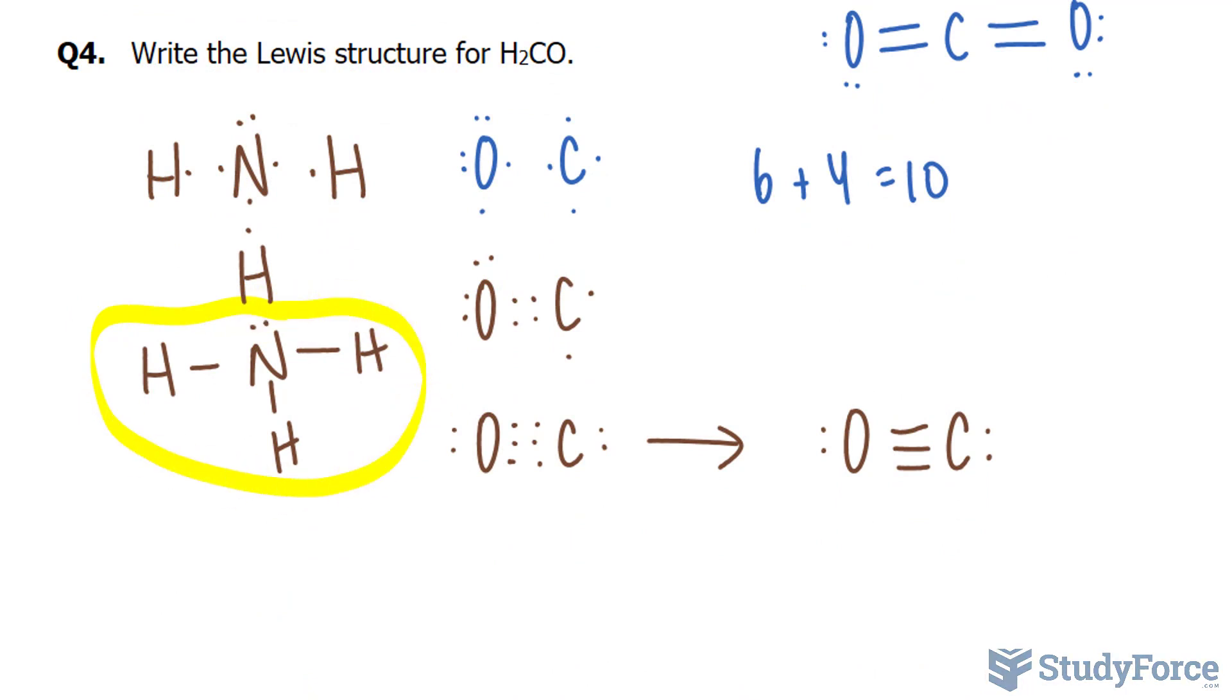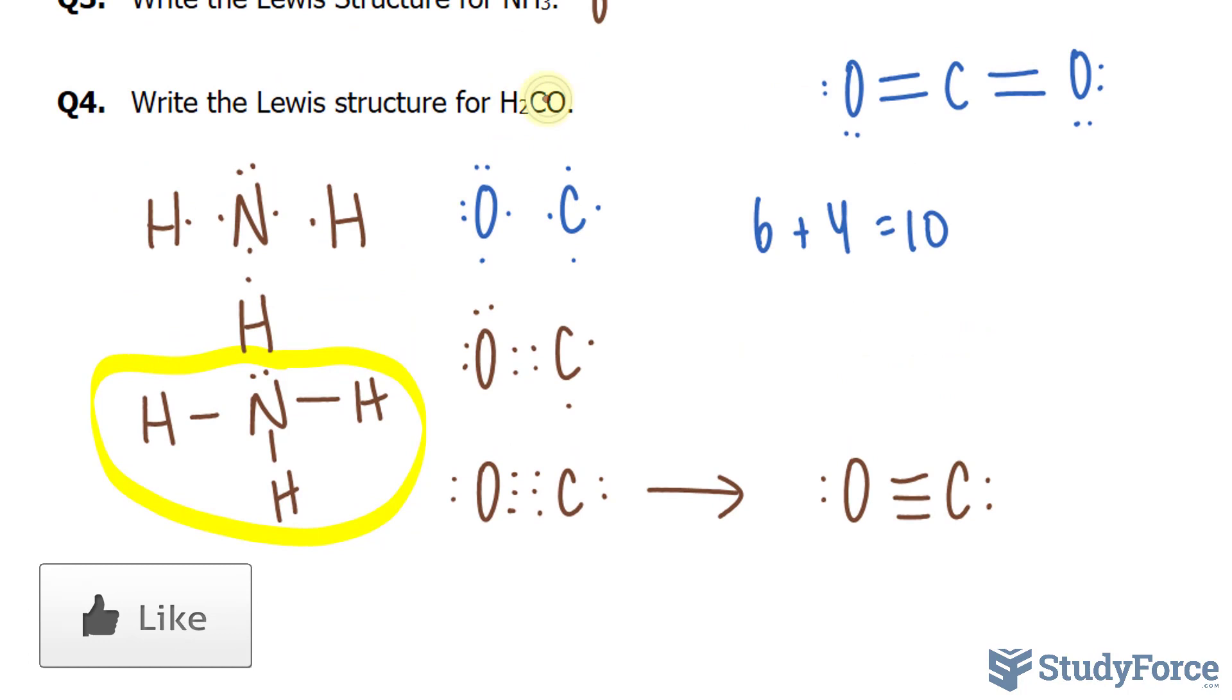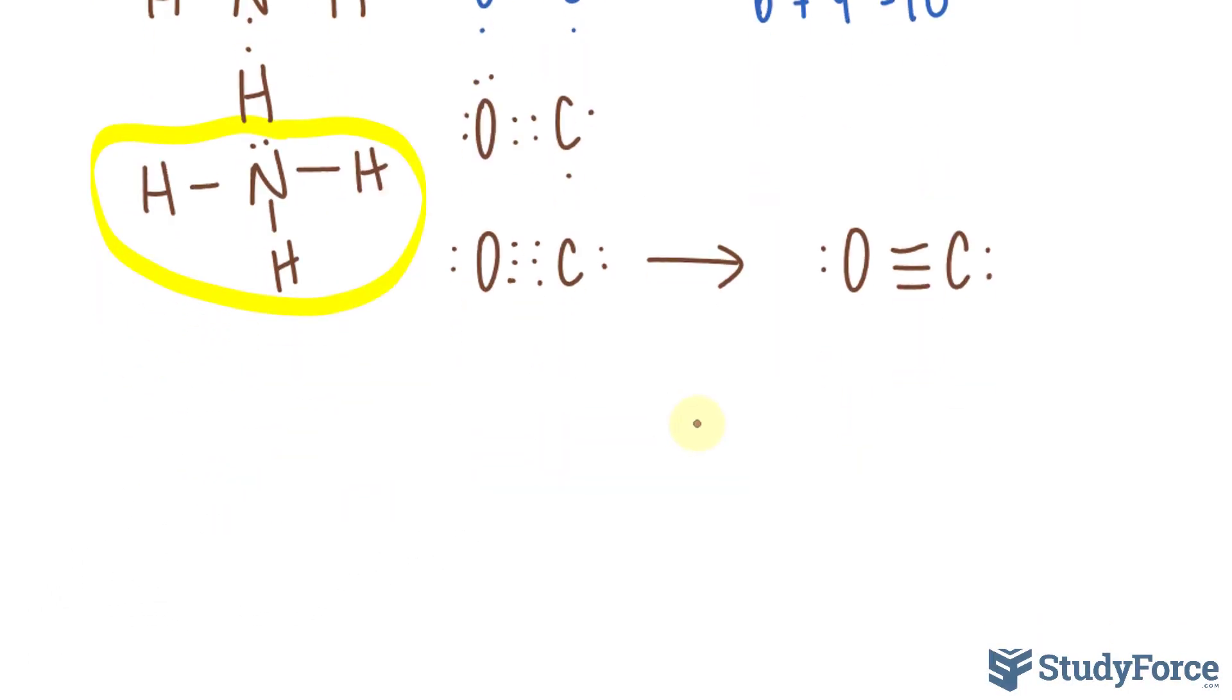And in question number 4, we need to find the Lewis structure for H2CO. Now according to the chemical formula, hydrogen is bonded to carbon. And carbon is bonded to oxygen. Oxygen is the most electronegative, so I'll write down O. And that's being bonded to carbon and the 2 hydrogens are being bonded to carbon. Now I've removed the lines just so that I can do this systematically. We have 6 valence electrons for oxygen, 4 for carbon, and 2 times 1 to represent hydrogen. That's equal to 12.